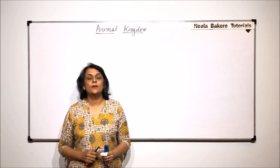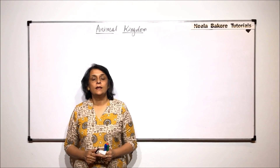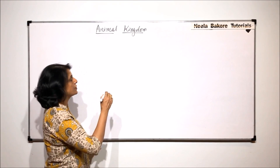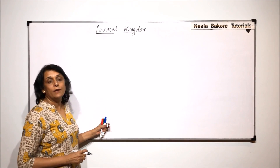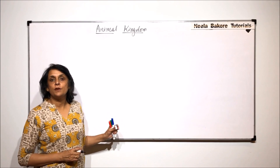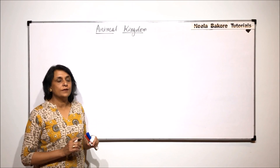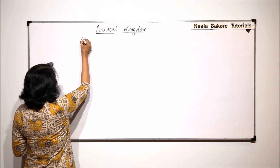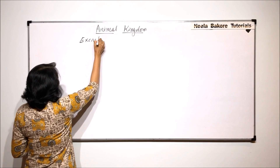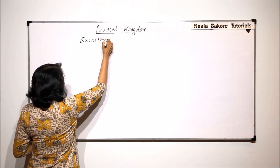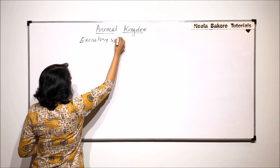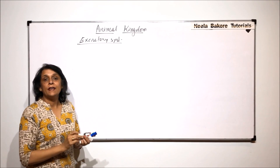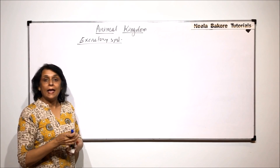In this part we will try to compare animals on the basis of a few more systems. We have already talked about digestive, respiratory and circulatory systems. Now let us see how we can classify or group various animals on the basis of the excretory system.